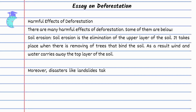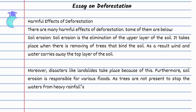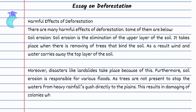Moreover, disasters like landslides take place because of this. Furthermore, soil erosion is responsible for various floods, as trees are not present to stop the waters from heavy rainfalls that gush directly to the plains. This results in damaging of colonies where people are living.